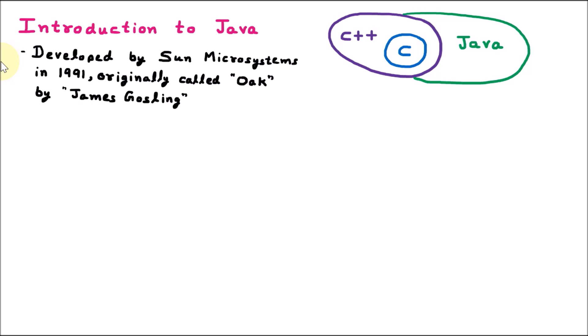James Gosling was the person who gave the name Oak. That's why if somebody asks who is the developer of Java, people say it is James Gosling. And in 1991, Java was developed at Sun Microsystems. And in 1995, it was renamed Java.